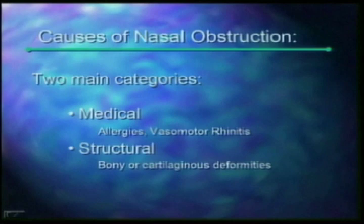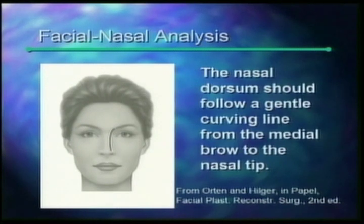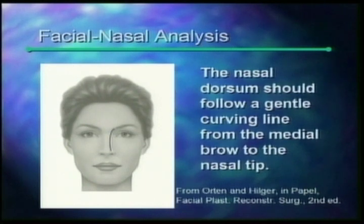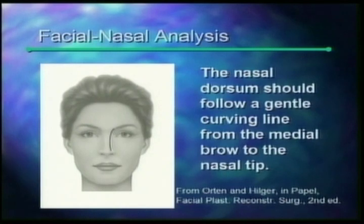These structural issues are bony or cartilaginous deformities which result in nasal obstruction. Regarding facial harmony — there are some aesthetic norms which have been established for both facial analysis and for the nose in particular. When one looks at the nose, the eyebrow to the nasal tip should form a nice gentle curve extending down, as shown in this diagram, from the medial brow down through the nasal dorsum to the nasal tip.